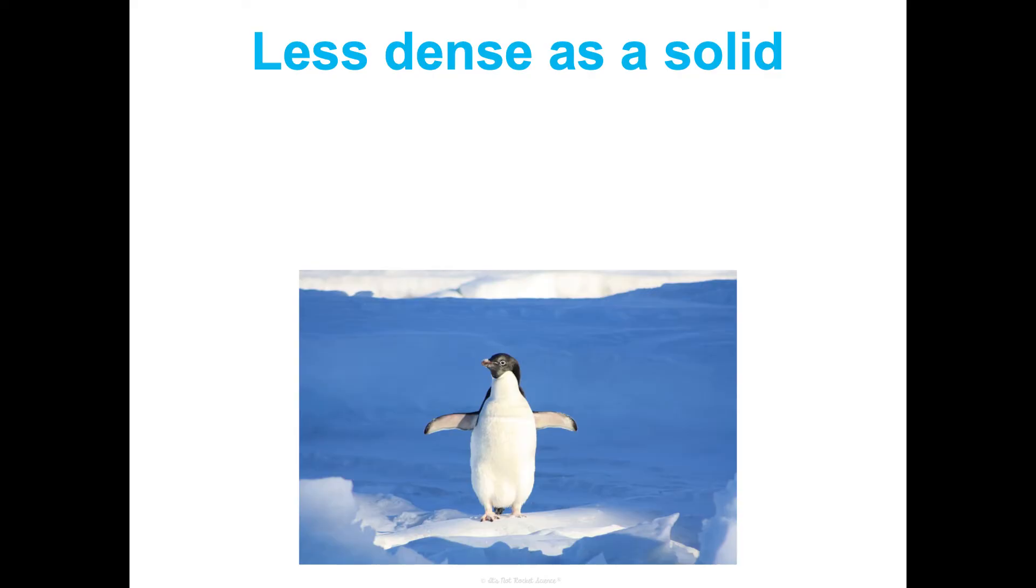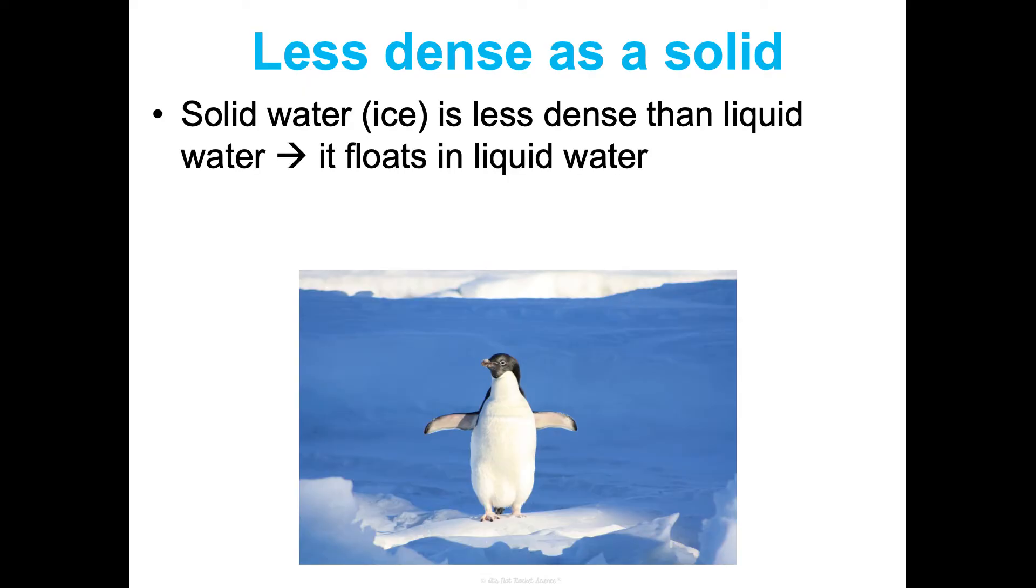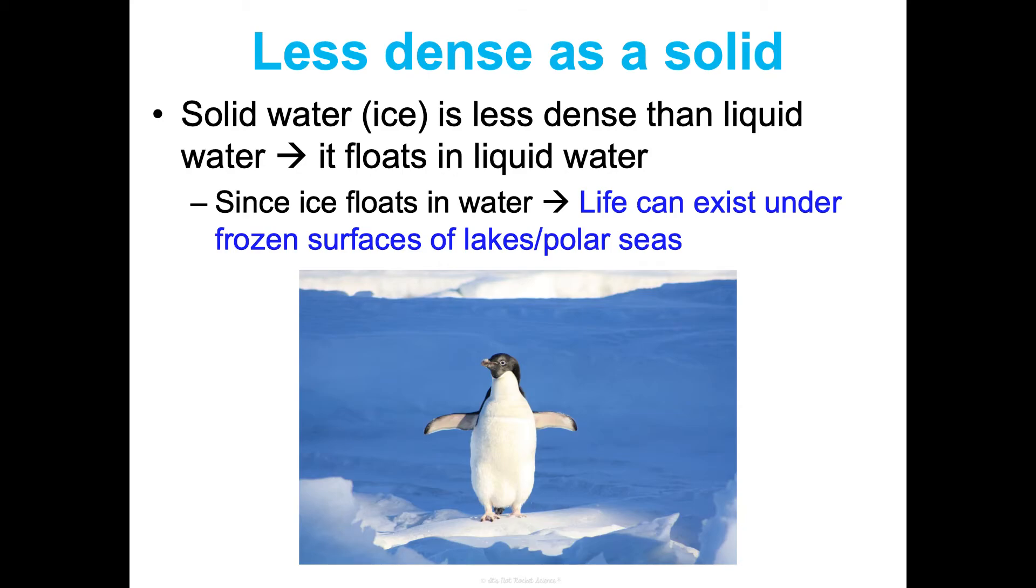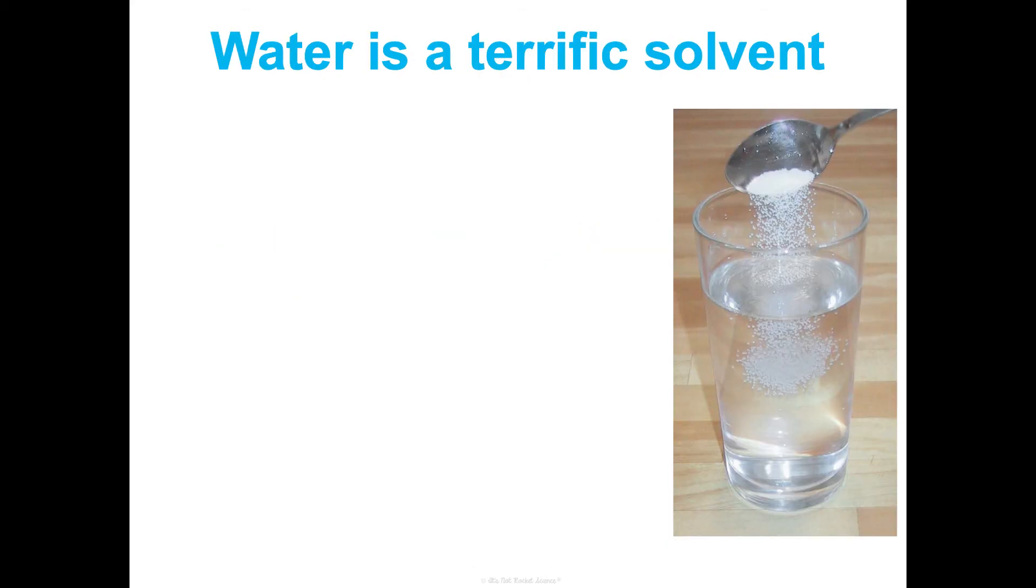All right, two more. Another thing that is interesting about water is it's actually less dense as a solid. The density of material is usually a constant, but with water, solid water, which is ice, it's less dense than liquid water, which is why it floats in liquid water. And since it's able to float, that means life can exist under frozen surfaces like a frozen lake or in polar seas where there's icebergs and things like that.